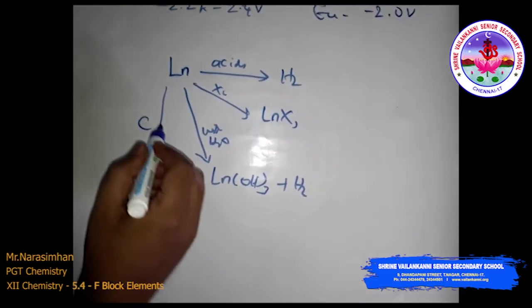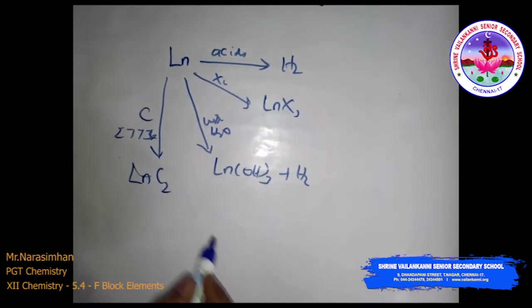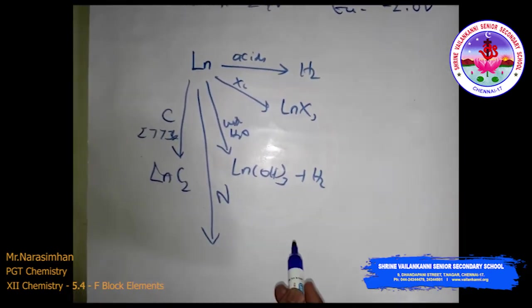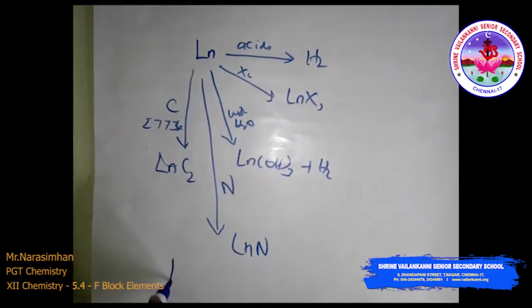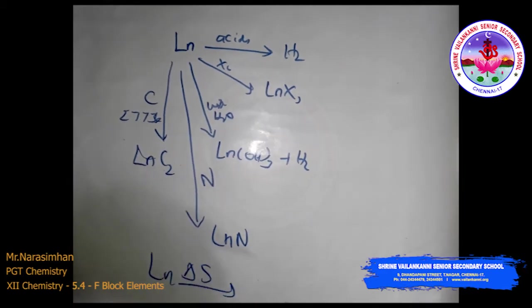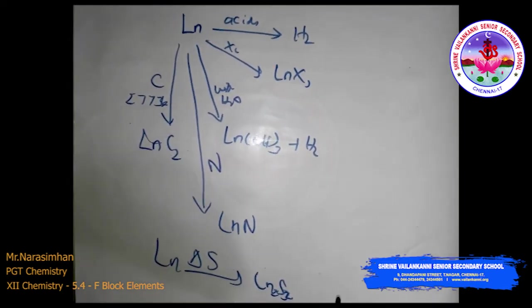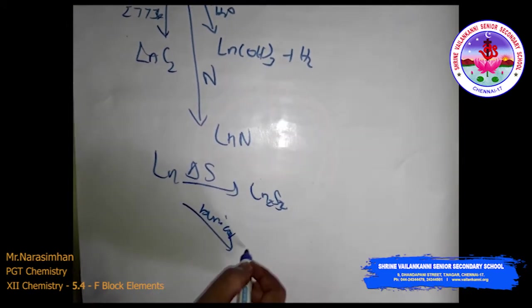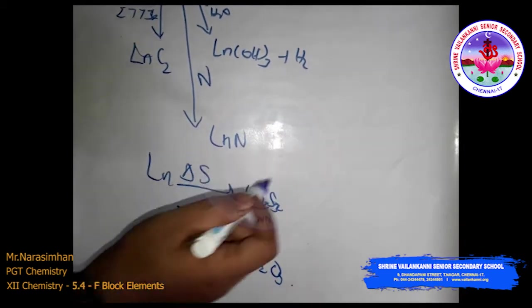The metals react with carbon (coke) at very high temperatures (2773 K) to form carbide (lanthanoid carbide). When heated with nitrogen, they form lanthanoid nitride. When heated with sulfur, they produce lanthanoid sulfide (Ln2S3). When burned in air (in oxygen), they form oxides. This summarizes the chemical reactivity of the lanthanoid series.